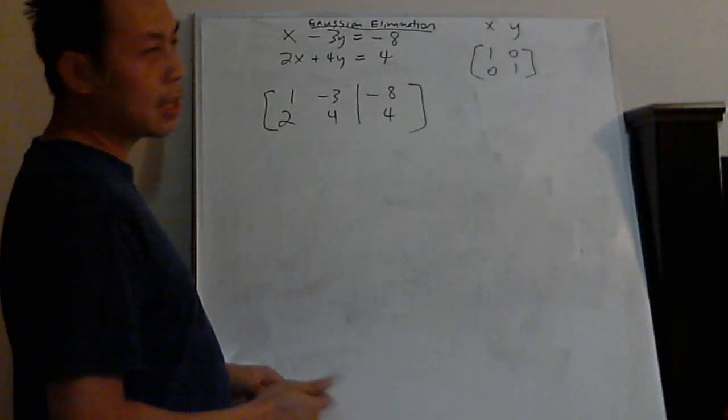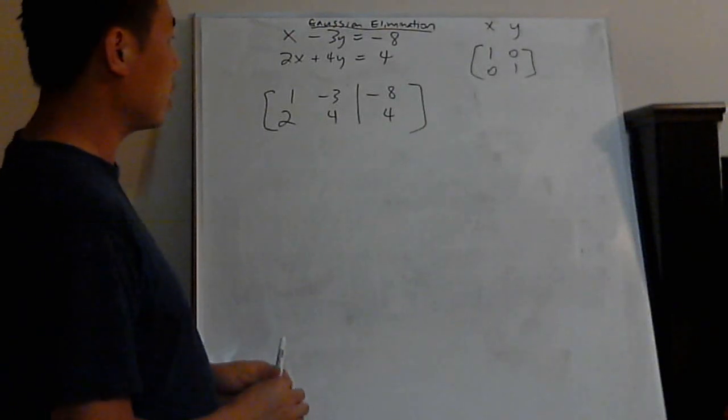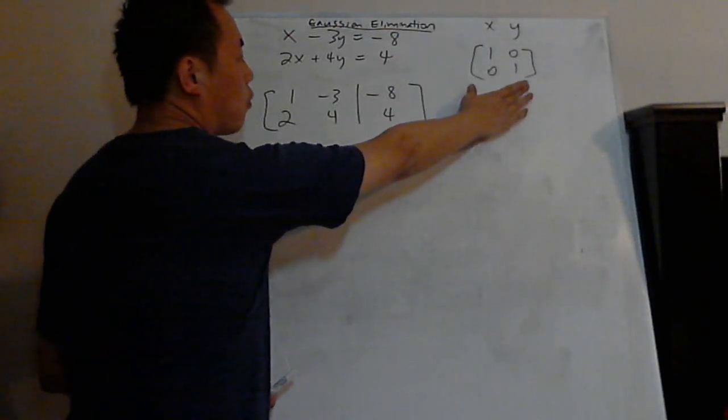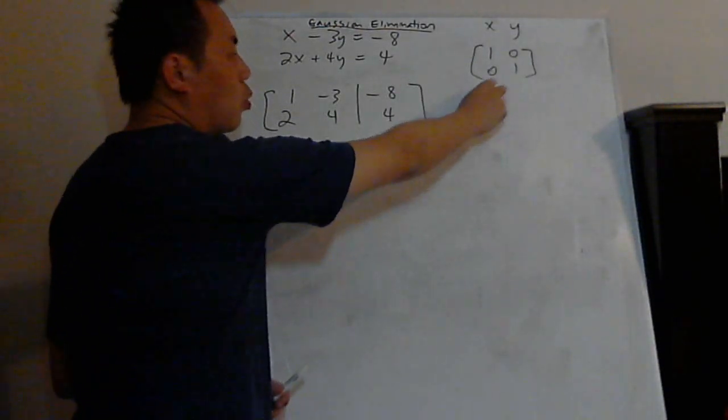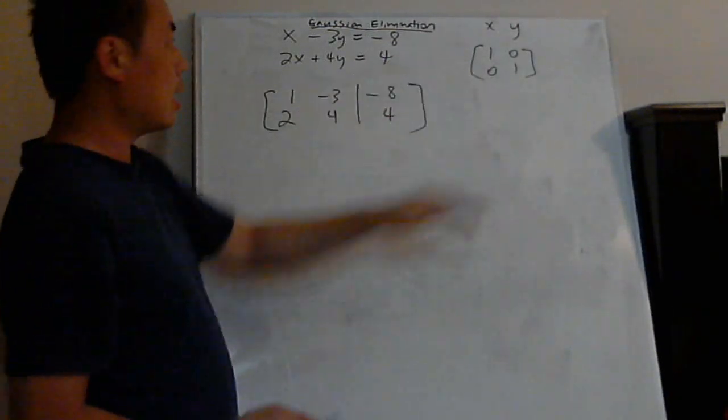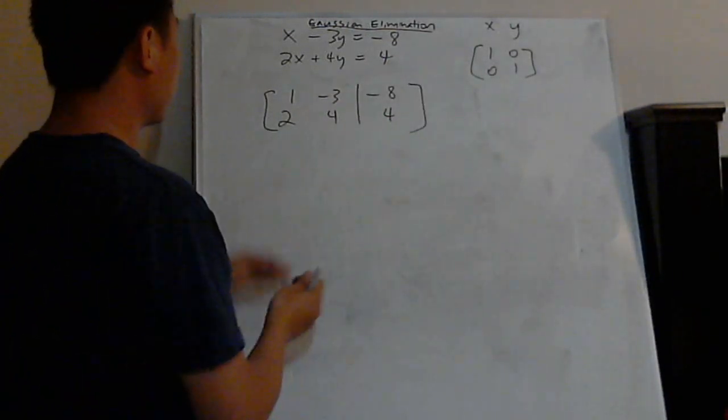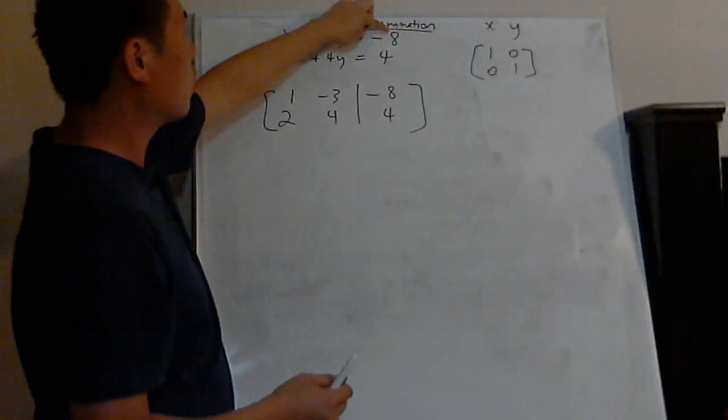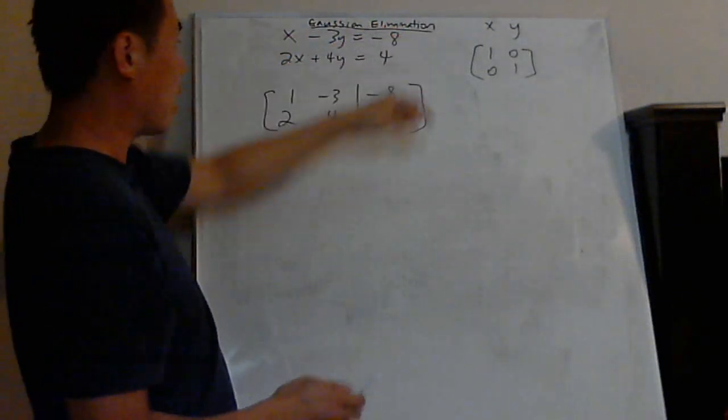But the whole idea is that when you're doing Gaussian Elimination, you're trying to put in this format: 1, 0, 0, 1. What this means here is that, think about when you have two equations here, x, y equals something, x, y equals something, right?